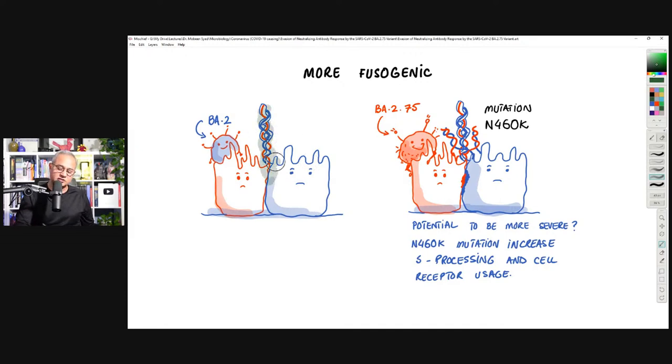That means it can bind two cells together better compared to its parent, BA.2. So here, if you see BA.2 is trying to fuse these two cells and just this much of the fusion occurred. Here, a lot more fusions have occurred. This fusion of the cells causes syncytia formation. Syncytia formation means multiple cells that are bound together and become a unit big cell. These are also sometimes called multi-nucleated giant cells because these are many cells that have become fused.